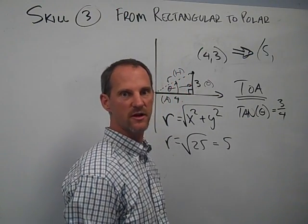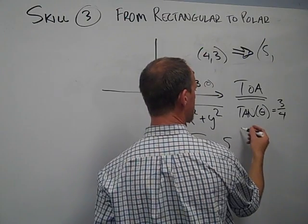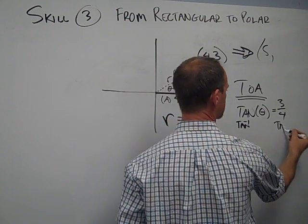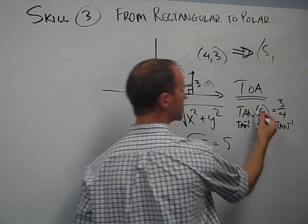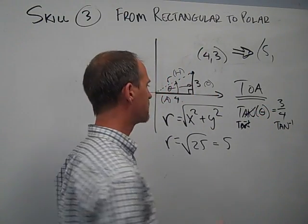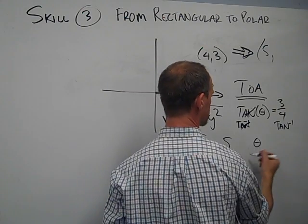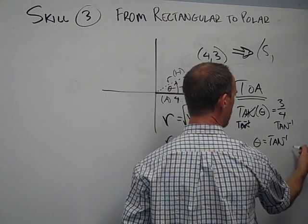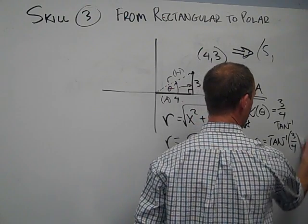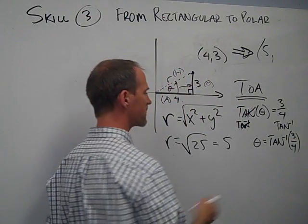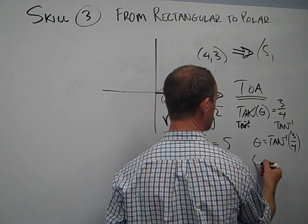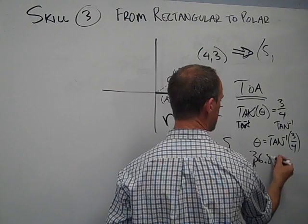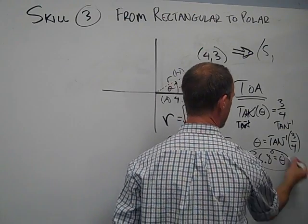Some books will call it the arc tangent of both sides. But by taking the inverse tangent of both sides, you can think of it in a sense as canceling. It's the opposite of the operation, so it doesn't really cancel like division. But theta is equal to the inverse tangent of 3 fourths. And when you type that into your calculator, you'll see that it is very close to about 36.8 degrees.